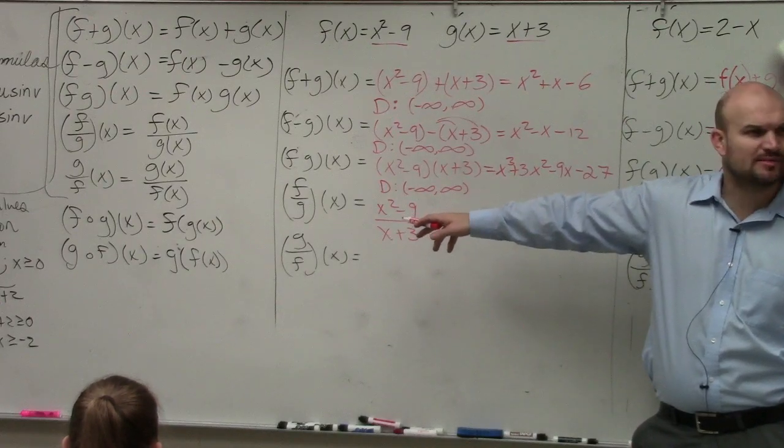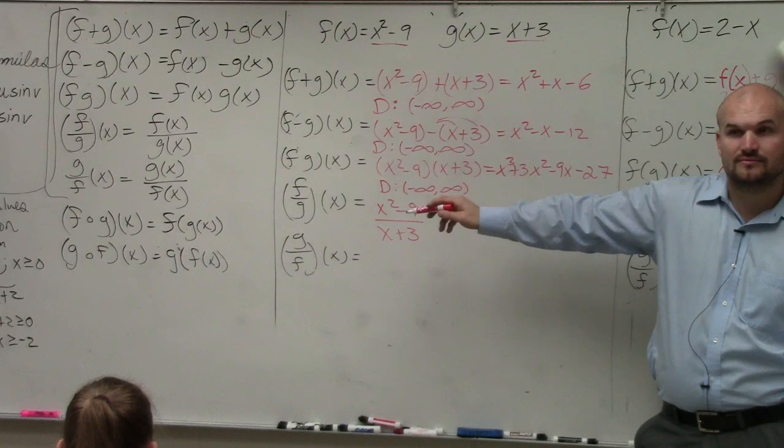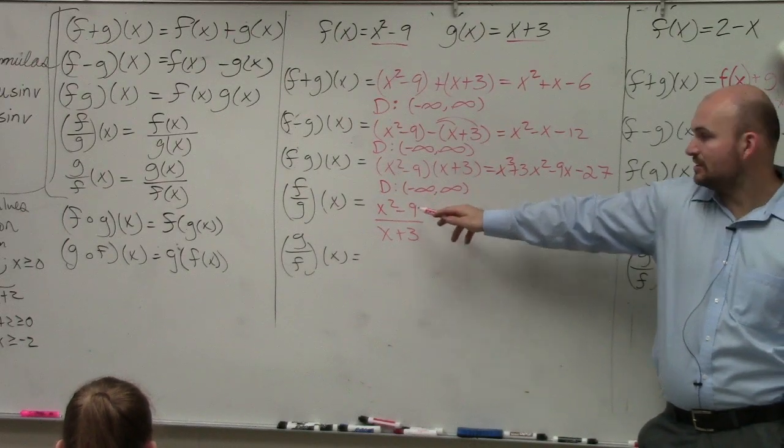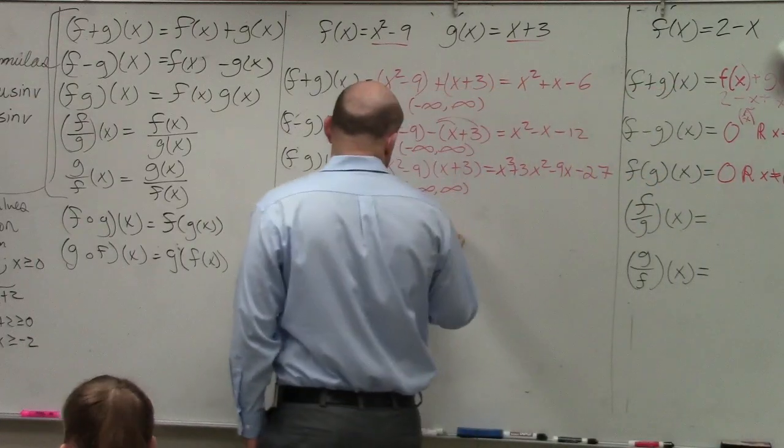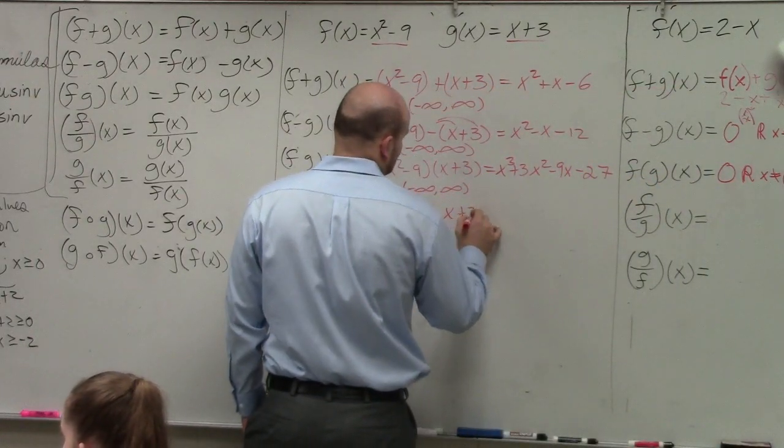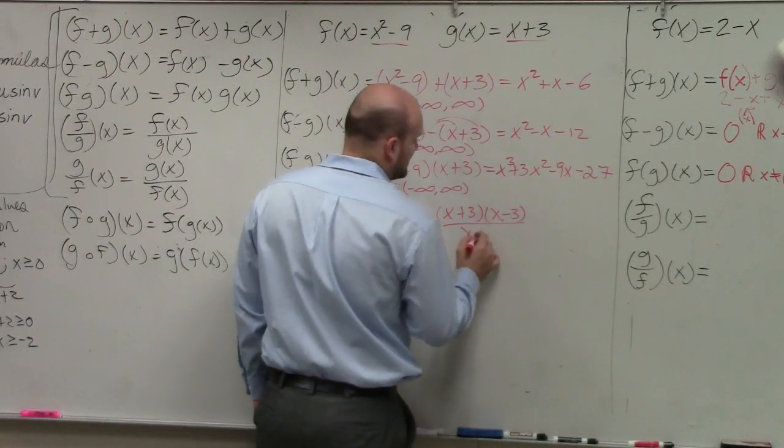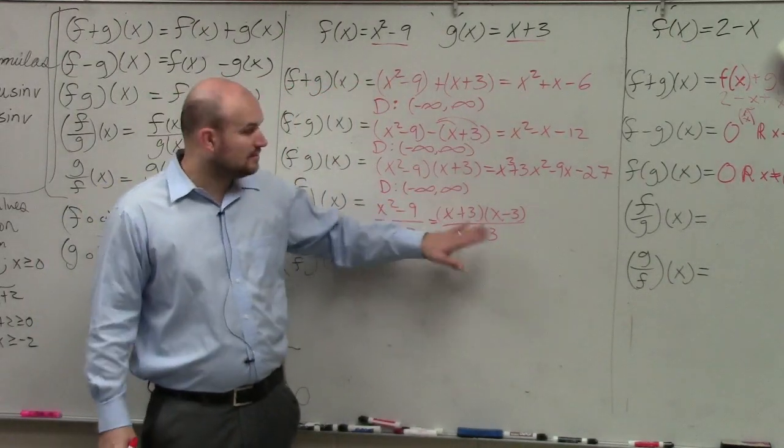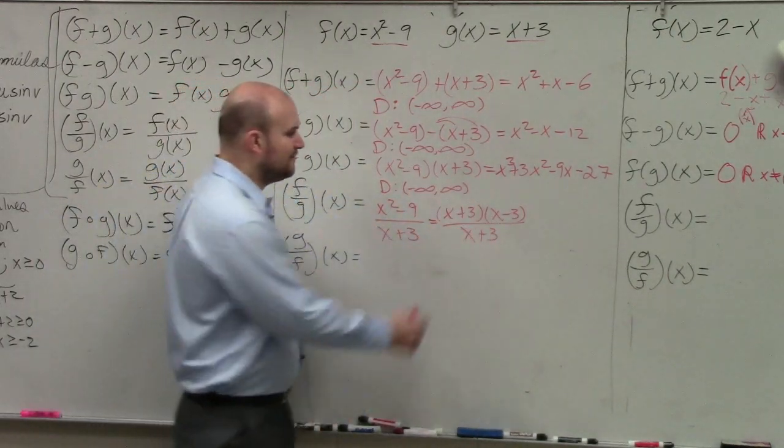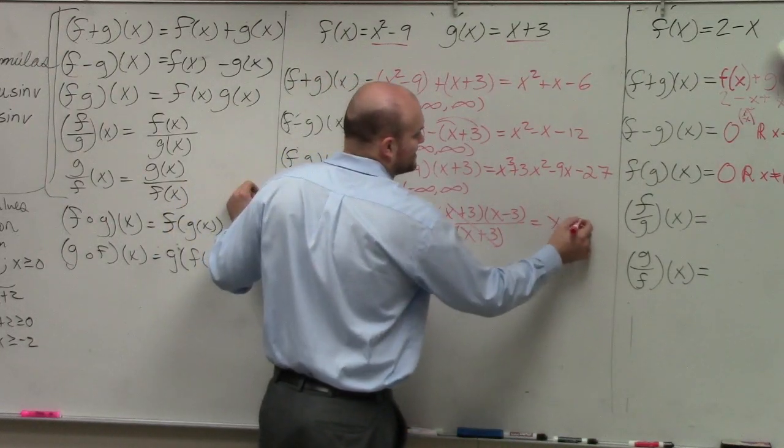x squared minus 9. What can x squared minus 9 be factored to? And we'll learn about this later in the year. But when you have a rational expression and you need to simplify it, always look to factor it. Therefore, then you guys see my x plus 3s can divide out. So my answer is x minus 3.